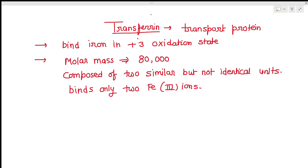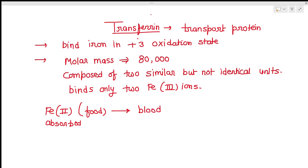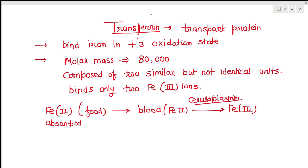Regarding the mechanism: humans and other animals take in iron in the Fe²⁺ form — Fe²⁺ is absorbed by the human body from food and goes to the bloodstream. In the bloodstream it is oxidized to Fe³⁺. This oxidation is done by an enzyme called ceruloplasmin, which is a copper metalloenzyme.